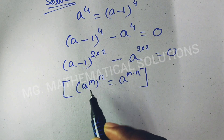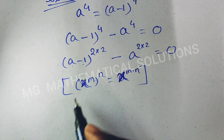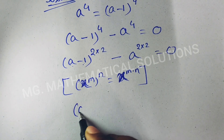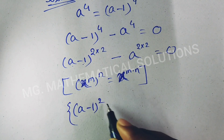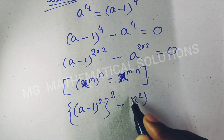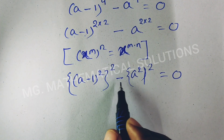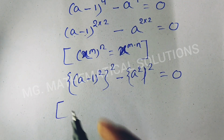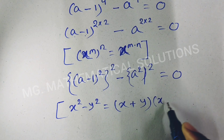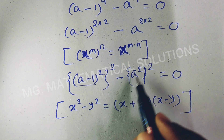Here a means (a minus 1). If we write this as x, we understand better. So x means (a minus 1), m means 2, and n means 2. So we get: (a minus 1) whole square, whole to the power 2, minus a square whole to the power 2, equal to 0. Now we use the formula a squared minus b squared equals (a plus b)(a minus b). Here x means (a minus 1) whole square and y means a square.